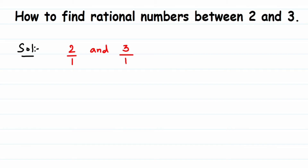Now, between 2 and 3 there isn't much gap, so how do we find rational numbers in between? What I'm going to do is find equivalent rational numbers of 2/1 and 3/1. The reason for finding equivalent rational numbers is that the gap between the two numbers will increase, making it easier to find rational numbers between them.